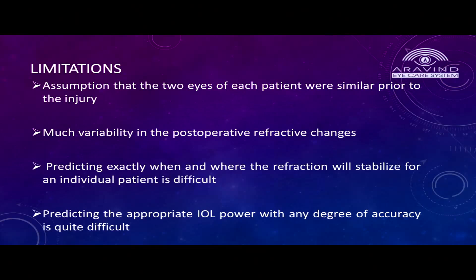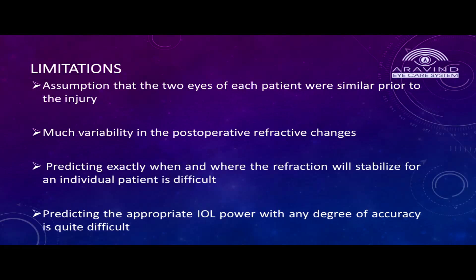Regarding limitations: we assumed that the two eyes of each patient were similar prior to injury. There is much variability in post-operative refractive changes that must be considered. Predicting exactly when and where refraction will stabilize in each case is very difficult, as is predicting the appropriate IOL power with a high degree of accuracy.